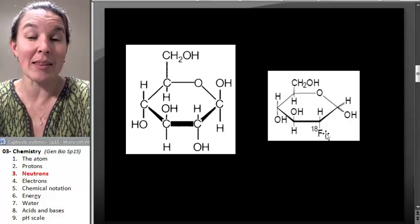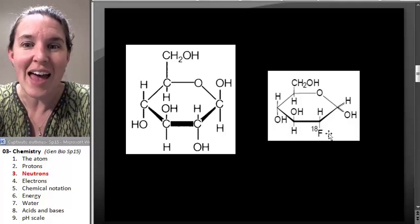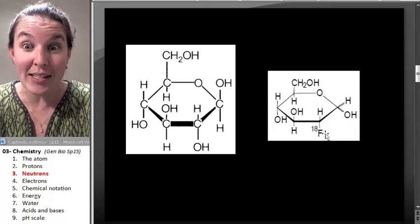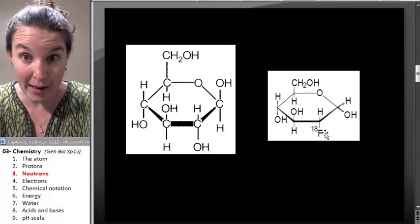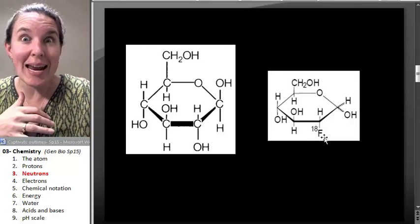They're like, we're going to make this glucose, this is a glucose molecule, glow in the dark. And so they attach this radioactive fluorine atom to the glucose molecule, and that it's an isotope. It's fluorine 18.